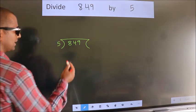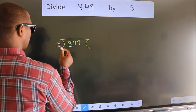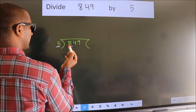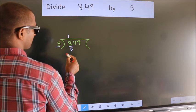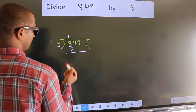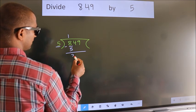Next, here we have 8, here 5. A number close to 8 in the 5 table is 5 once 5. Now we should subtract. We get 3.